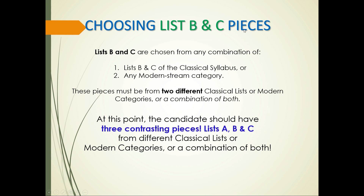Choosing list B and C pieces: list B and C are chosen from any combination of the list B and C of the classical syllabus or any modern stream category. These pieces must be chosen from two different classical lists or modern categories, or a combination of both. At this point, the candidate should have three contrasting pieces — lists A, B, and C — from different classical lists or modern categories, or a combination of both.